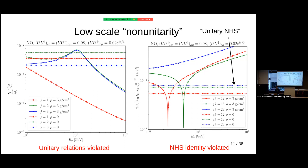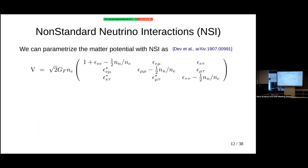An audience member asks about the change of sign and the maximum around 1–10 GeV on the left plot. The speaker responds that the feature depends sensitively on the non-unitarity parameters and can change completely — so it's hard to give a general reason. Please stop me if you have any questions; it's nice to explain on the spot.